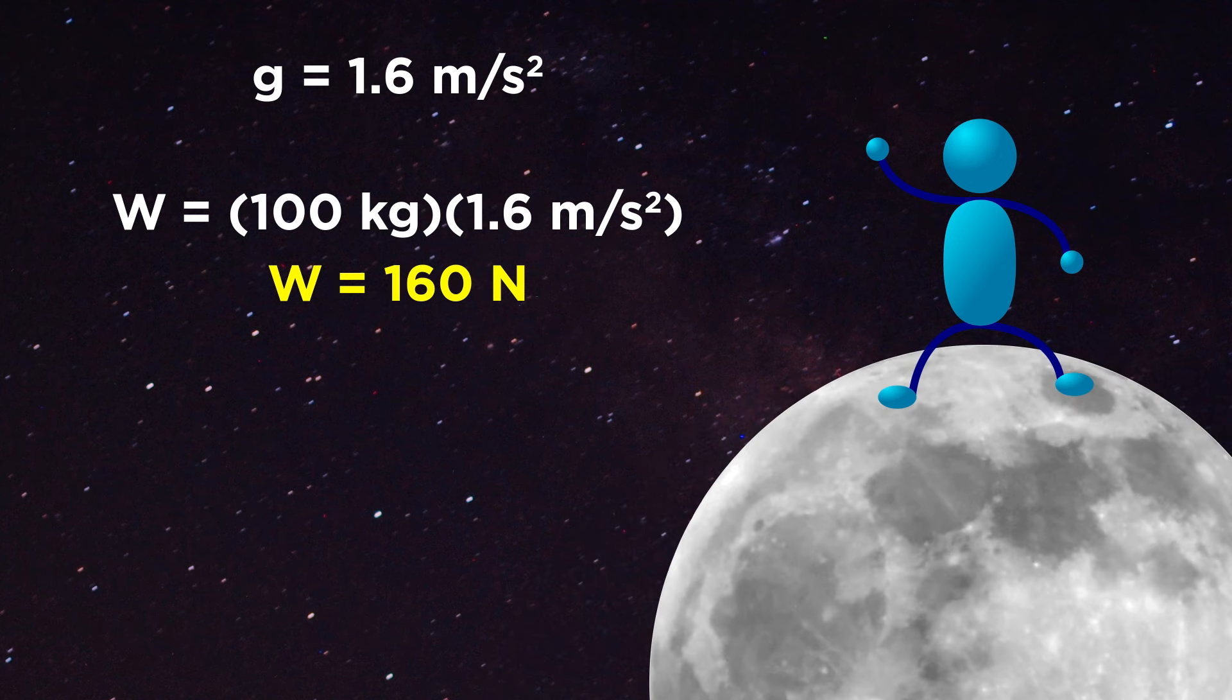On the moon, acceleration due to gravity is about one sixth of that of Earth's, because the moon is much less massive, so the person will weigh considerably less as well.